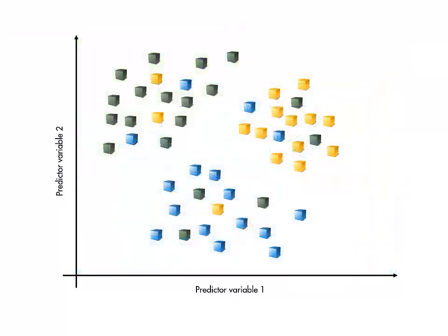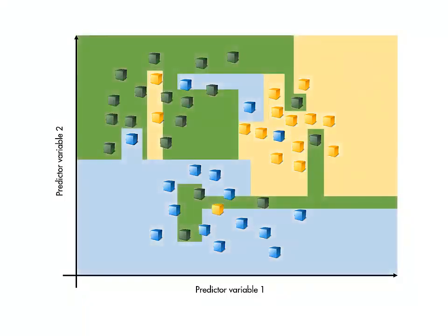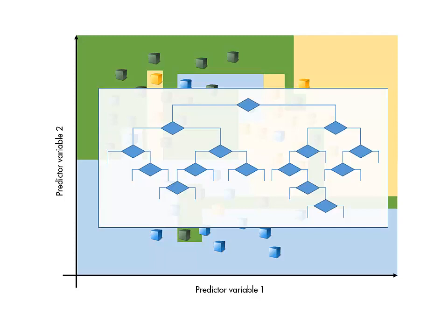As always, realistic data will have noise. Theoretically, a sufficiently complex tree could fit an arbitrarily complex boundary between points. However, this generally means that the model is overfitting the data.